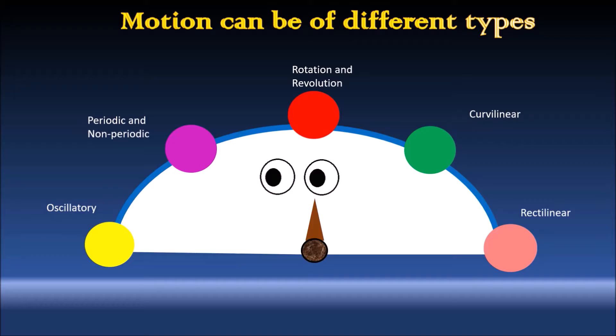We thus realize that motion can be of different types. So what are the types?